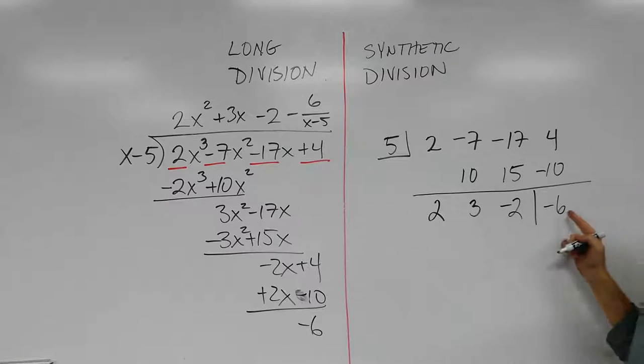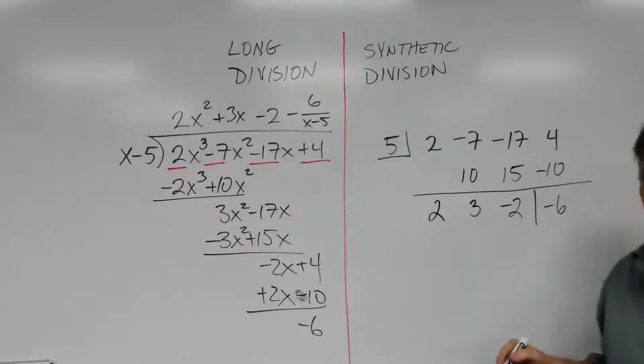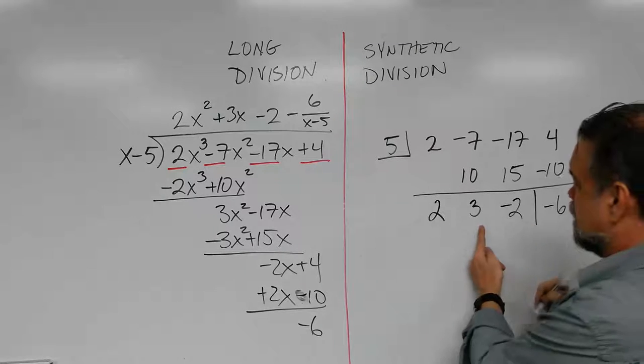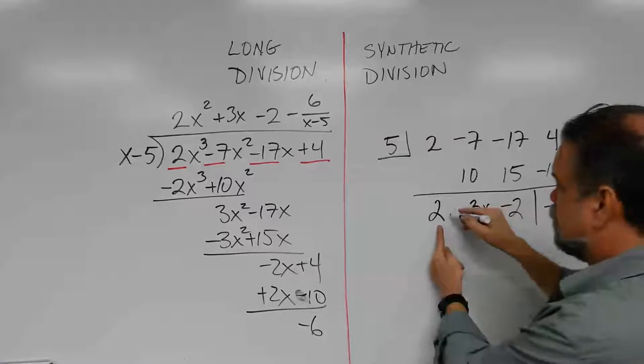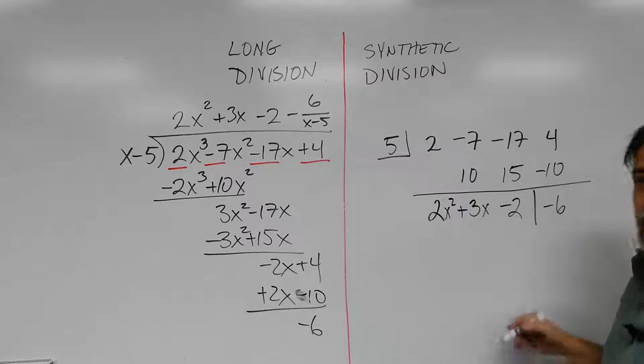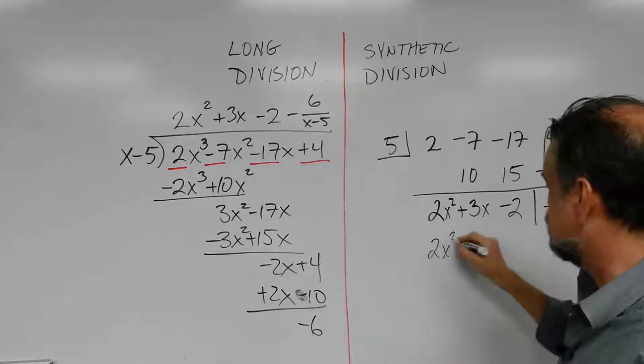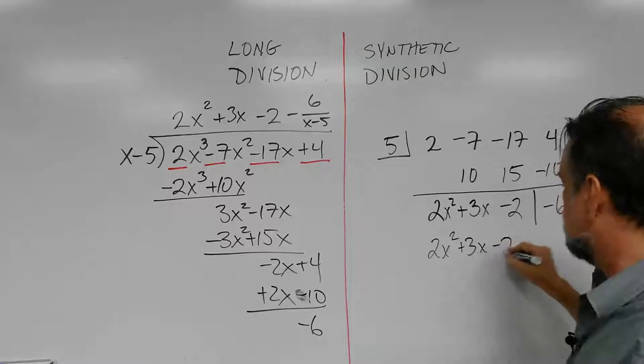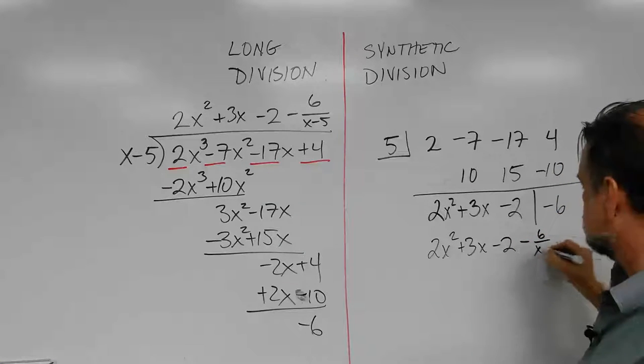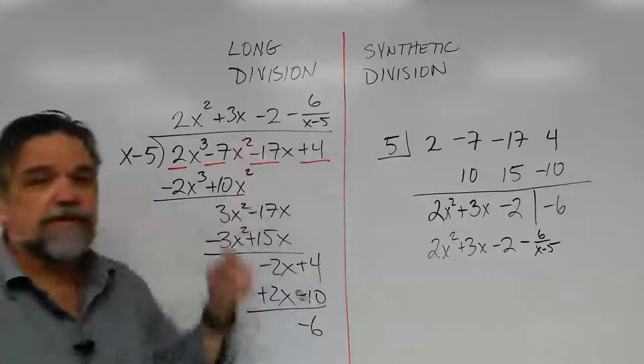So these are the coefficients of my answer. Now all I have to do is say, this is my constants. This is my x's, so I put a little x there. These are my x squareds, so I put a little x squared there. Put a plus there to fill that in. And we're kind of done now. All I have to do now is say, this is 2x squared plus 3x minus 2, and then my remainder, minus 6 over x minus 5. And you'll see we get the exact same answer here that we did right there.